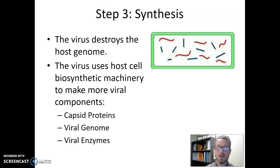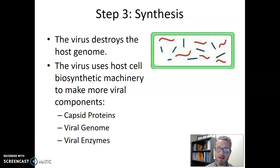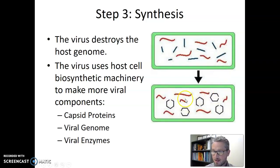Then the virus uses the host cell's biosynthetic machinery — things like polymerases and ribosomes — to make more viral components. Specifically, it makes capsid proteins, more copies of the viral genome, and copies of any viral enzymes the virus needs. So to summarize: attachment — virus sticks to the outside; entry — viral genetic material goes into the cell; synthesis — bacterial genetic material is destroyed, then viral genetic material is used to make all viral components.